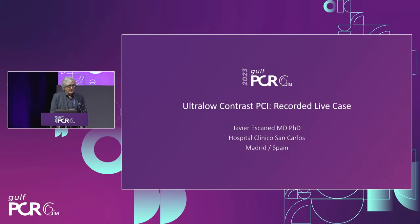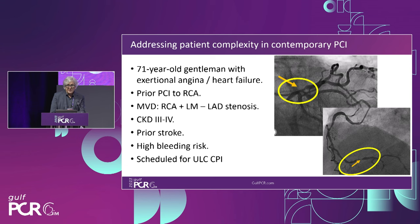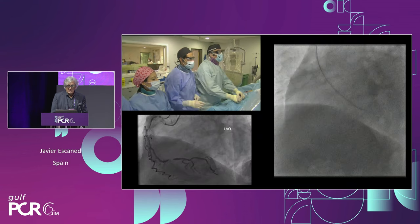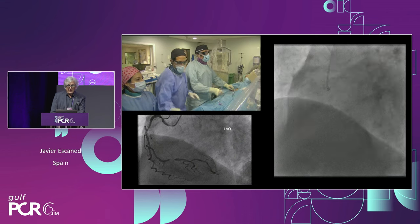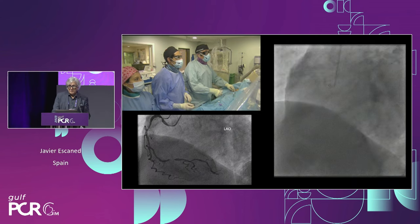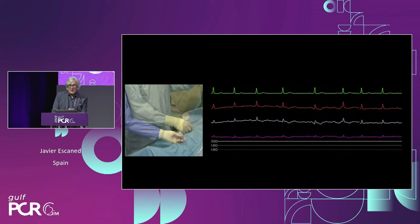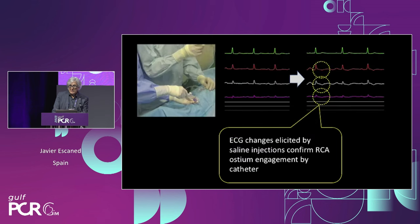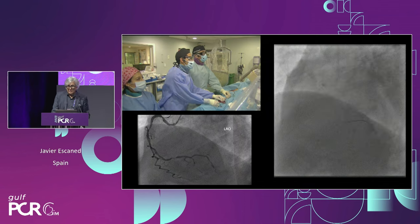Javier presents a recorded case. The previous diagnostic angiogram is displayed as a roadmap. A very simple way to know if you have engaged the ostium: make an injection of saline and look at the EKG. Unless you have a left bundle branch block or baseline changes, if you elicit EKG changes with saline injection, you are already engaged. From there, it's straightforward to navigate the wire. In this case, the shepherd's crook is stented, so an AL1 guide was not used due to anticipated difficulties. There are challenges crossing with IVUS and the drug-eluting stent will not advance either.